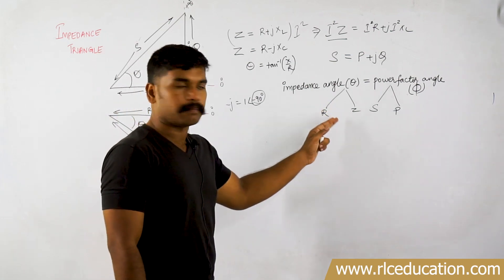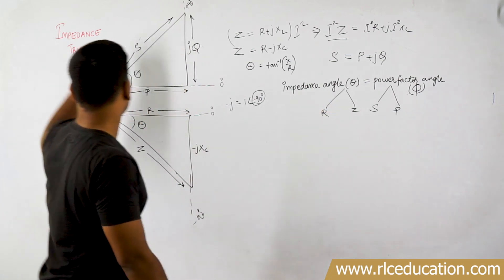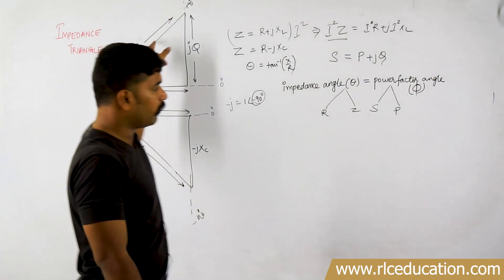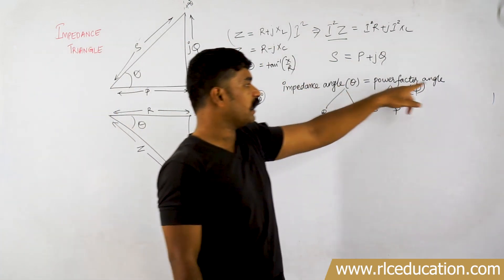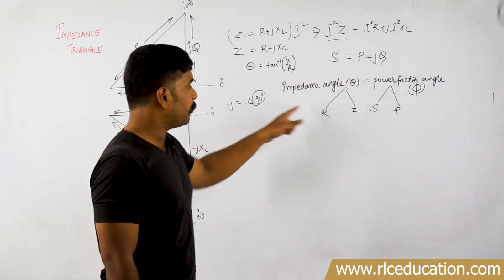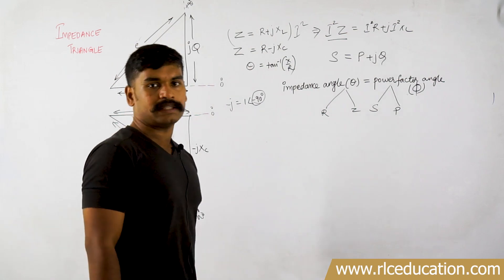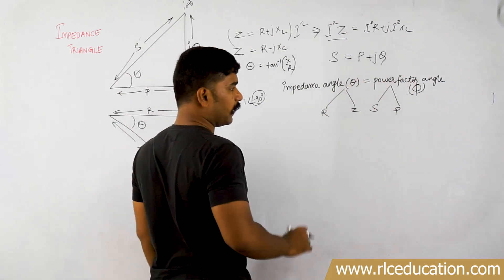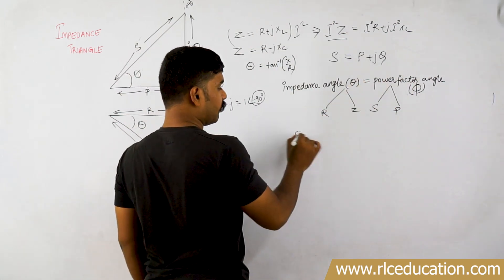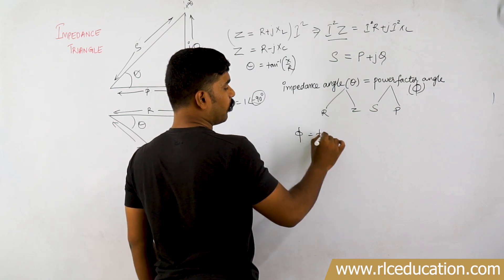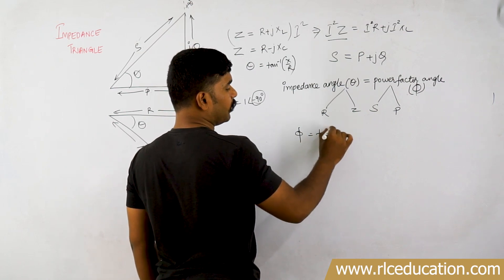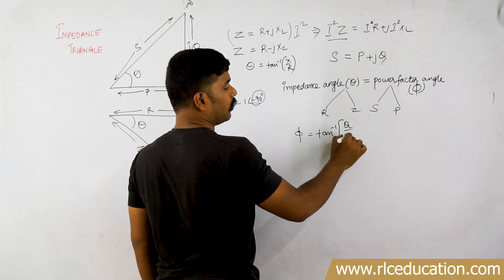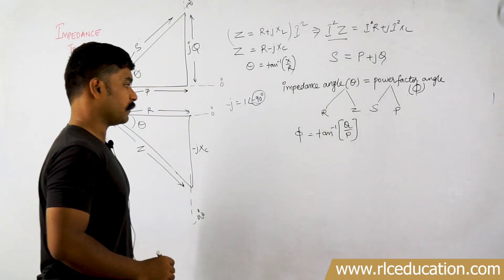Both angles are the same — just the type of triangle differs. This impedance triangle is now converted into a power triangle. In a power triangle, that angle is called the power factor angle; in an impedance triangle, it is called the impedance angle. The power factor angle equals tan inverse of reactive power divided by real power P.